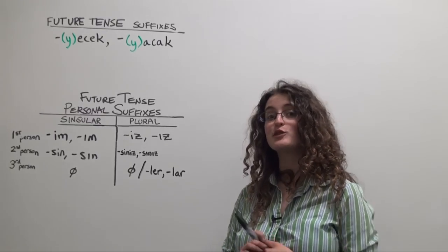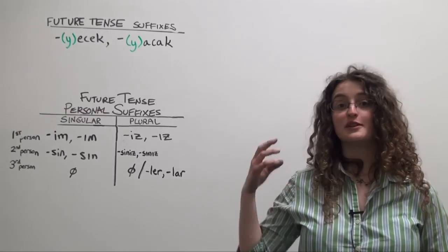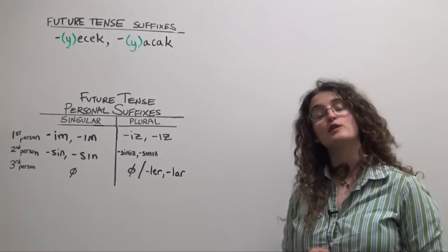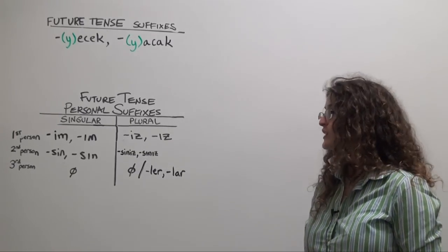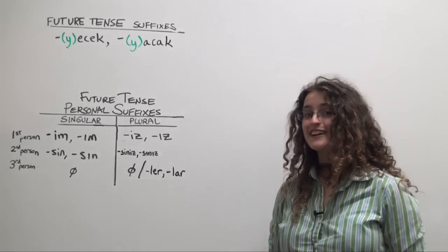Now I'm going to talk about how to form the future tense in Turkish. What we're going to do is start off with our verb stem, add the appropriate form of the future tense suffix, and then tack on the appropriate personal suffix. It's pretty simple.